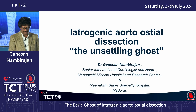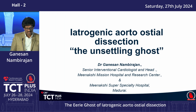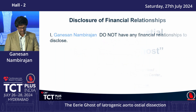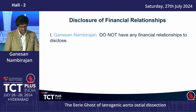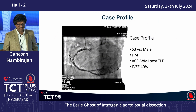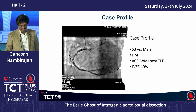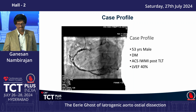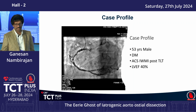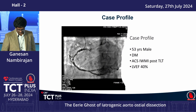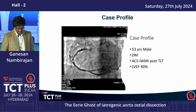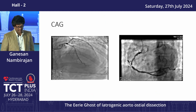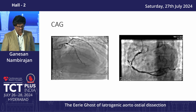I want to talk about one of the most feared complications of any cardiac intervention. I have nothing to disclose. This is my case: a 53-year-old male with ACS, post-thrombolysis, who came to us with an ejection fraction of 40%. Angiogram revealed a flow-limiting lesion in the mid-RCA, and moderate disease in the LAD. Being a culprit, we thought we could tackle the RCA first.